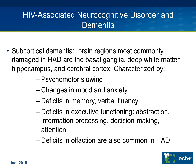It's important to remember that HIV dementia is a subcortical dementia. The brain regions most commonly damaged include the basal ganglia, hippocampus, deep white matter, and finally the cerebral cortex. It is characterized by psychomotor slowing, as well as changes in mood, anxiety, and behavioral changes. There are also deficits in executive functioning, abstraction, information processing, psychomotor slowing, and attention and decision-making. Deficits in olfaction are also common in HIV-associated dementia, though these can also be seen in Alzheimer's and vascular dementias.